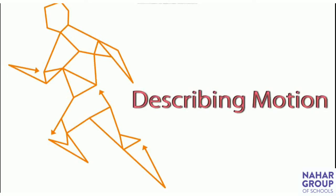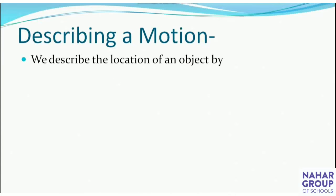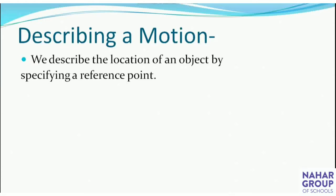Now when you understand what is motion, you might wonder how we describe a motion — is there a particular way? Describing a motion is very easy. We describe the location of an object by specifying a reference point, as I mentioned earlier. To describe a motion we must need a reference point.